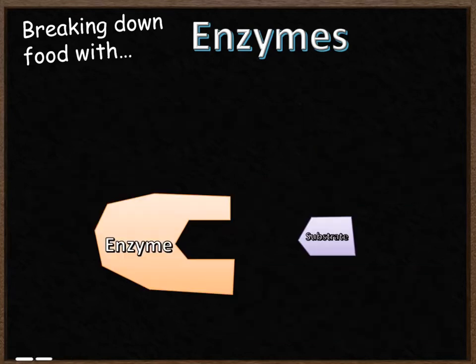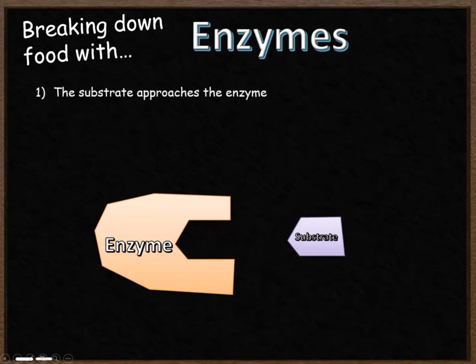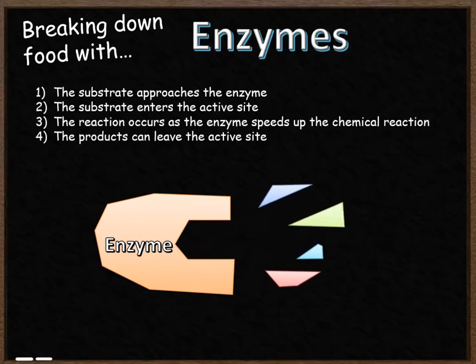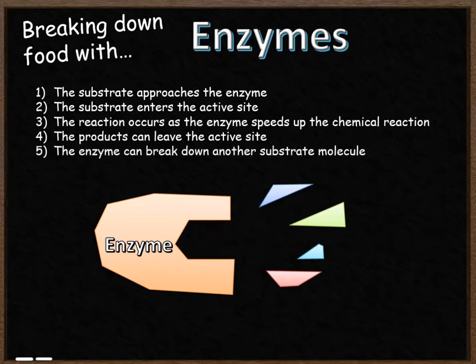Let's think about how this process actually works. We have our enzyme with its active site and a substrate molecule we're trying to break down. The substrate approaches the enzyme and enters the active site — it's the same shape so it fits in neatly. This is called the lock and key principle. The reaction then occurs inside the enzyme, the enzyme speeds up that process, and the products leave the active site. The enzyme can then break down another substrate molecule — it hasn't been changed in any way, so it can go on to complete more chemical reactions.